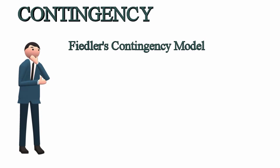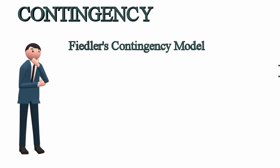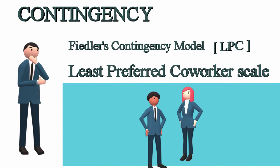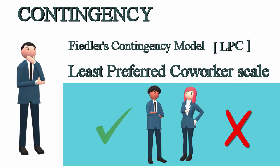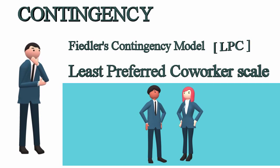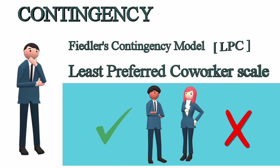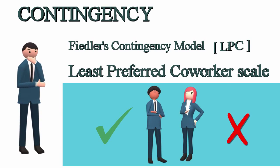Fiedler's Contingency Model. According to this theory, a leader's style is measured by a scale called the Least Preferred Coworker Scale. People filling out this survey are asked to think of a person who is their least preferred co-worker. Different people can be effective in different situations. The LPC score is akin to a personality trait and is not likely to change.